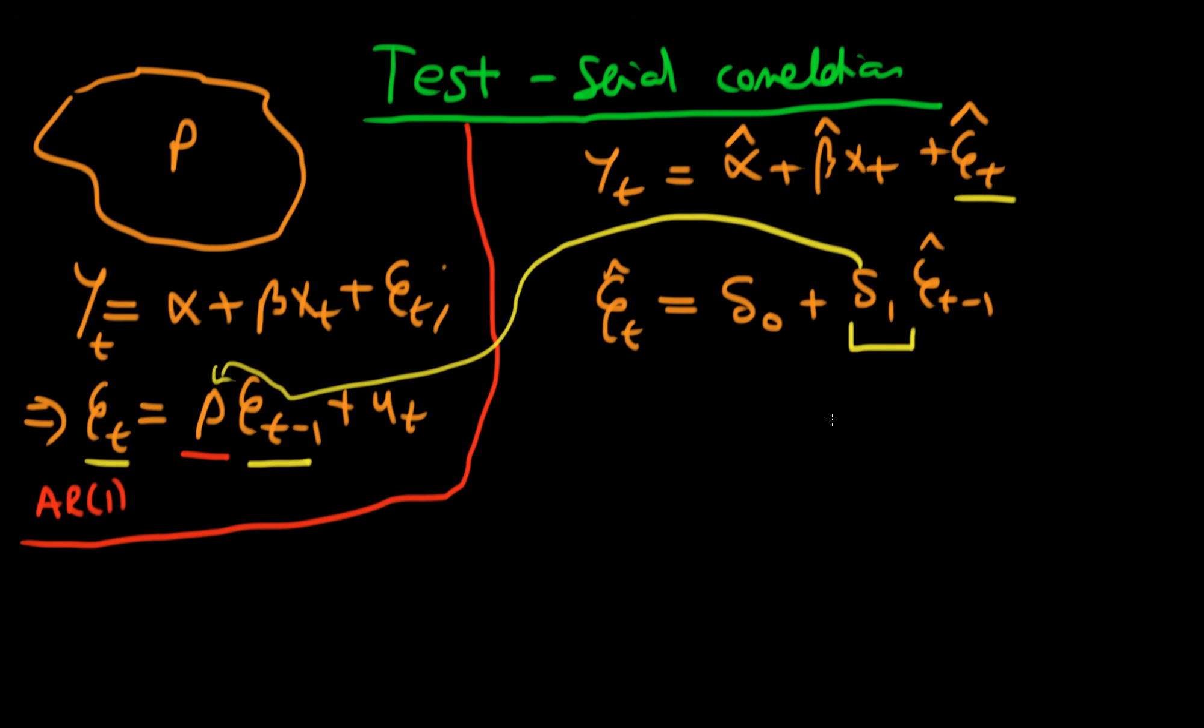We construct a t-statistic which is equal to our least squares estimate of delta one in this second regression equation, divided by the estimated standard error of delta one. If the absolute magnitude of t is greater than the critical value, then we reject the null hypothesis.